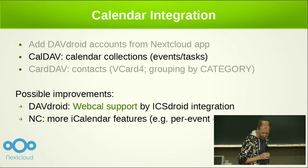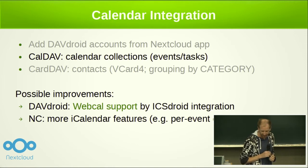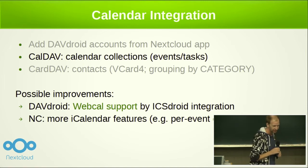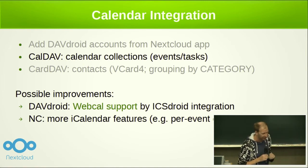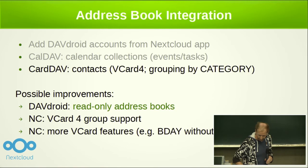What could be done on the Nextcloud side? You could implement more iCalendar features. We recently introduced per-event colors, so it's now possible to give a single event a specialized color. That's it for that part.